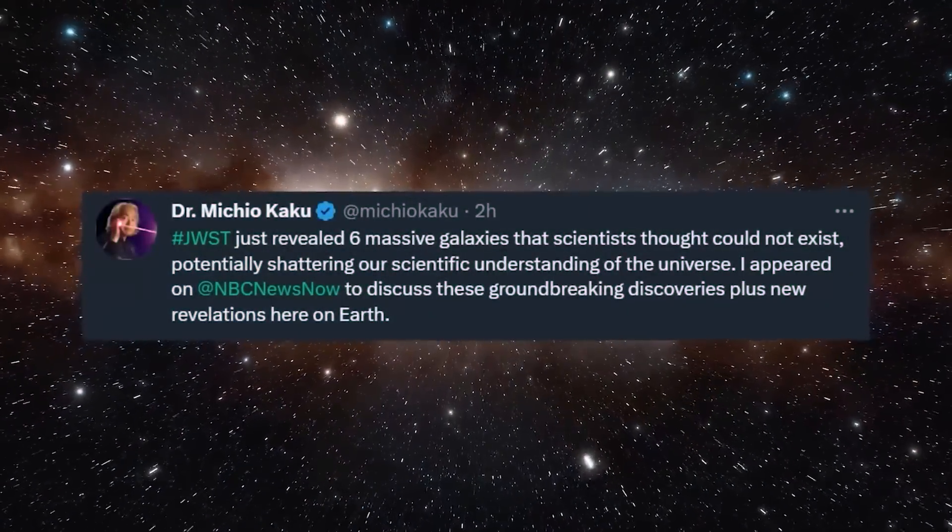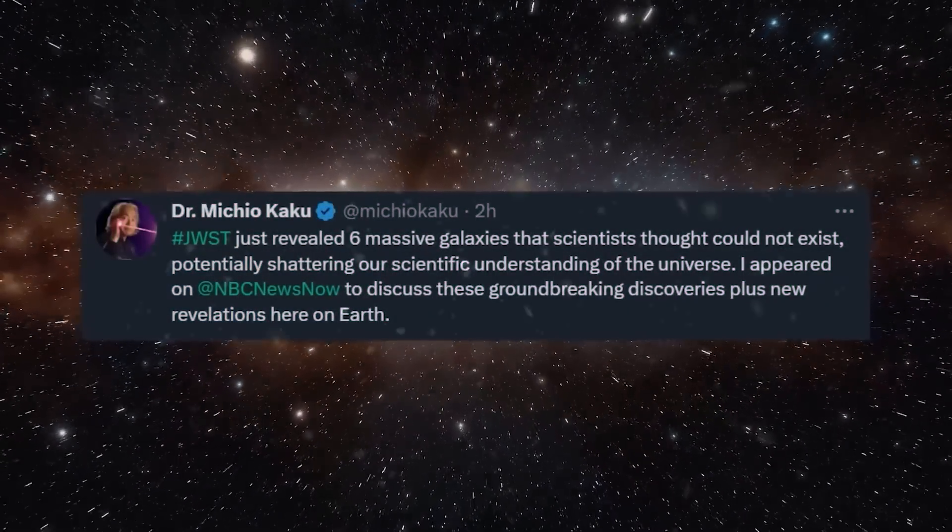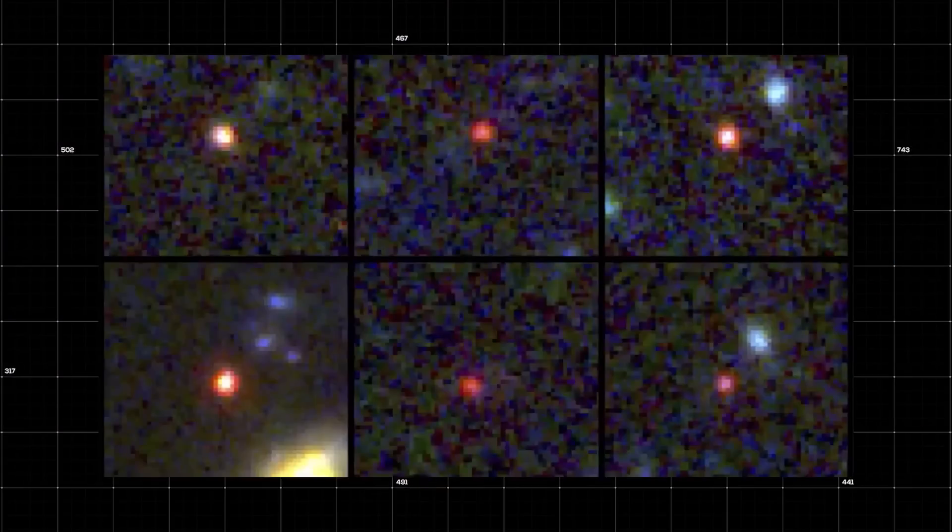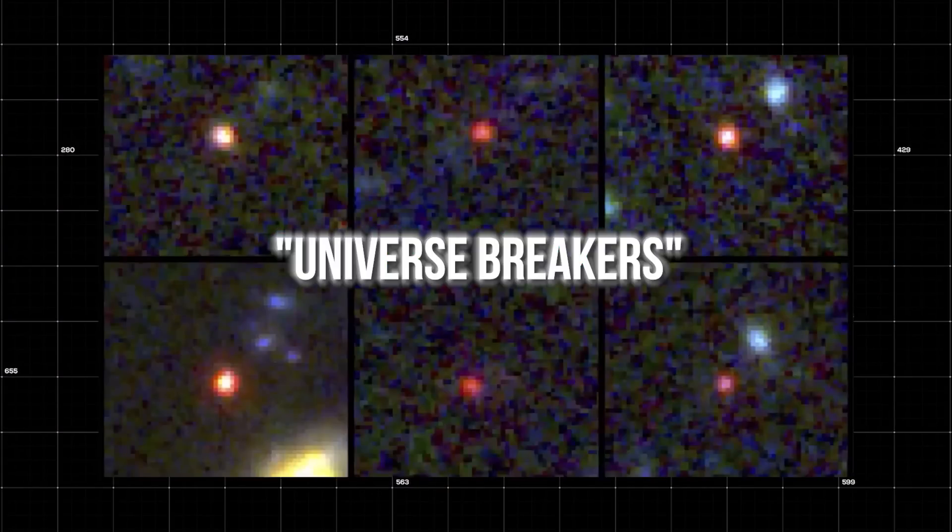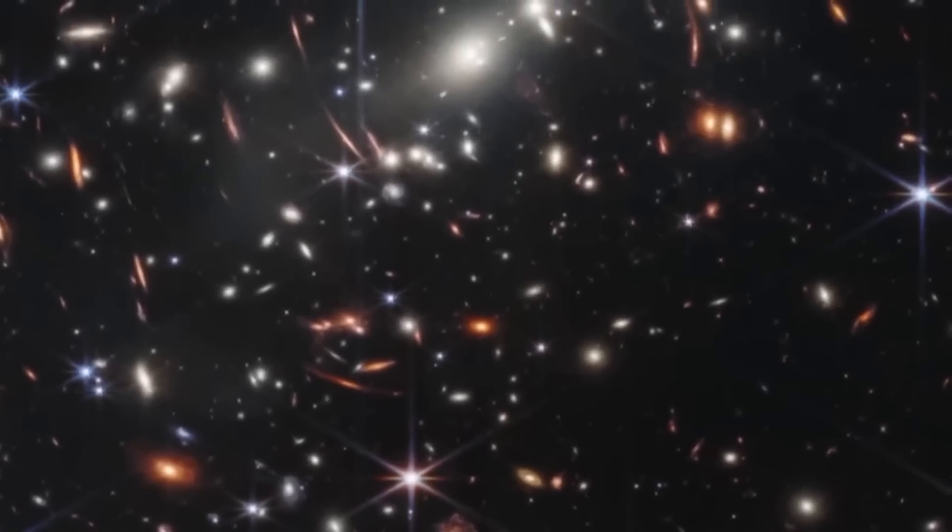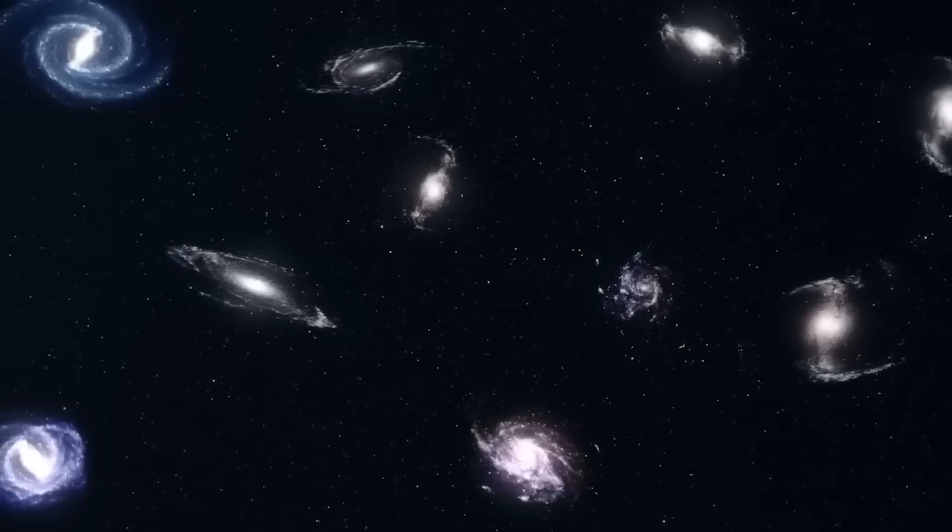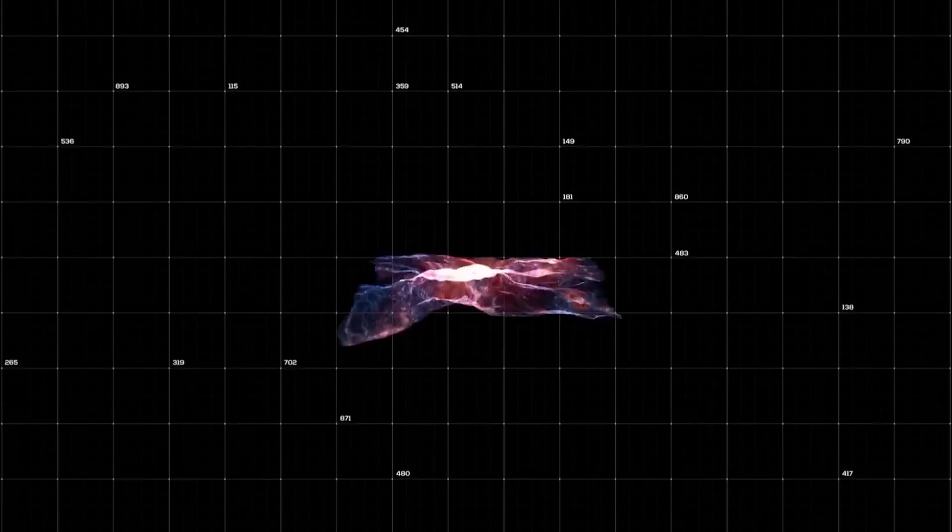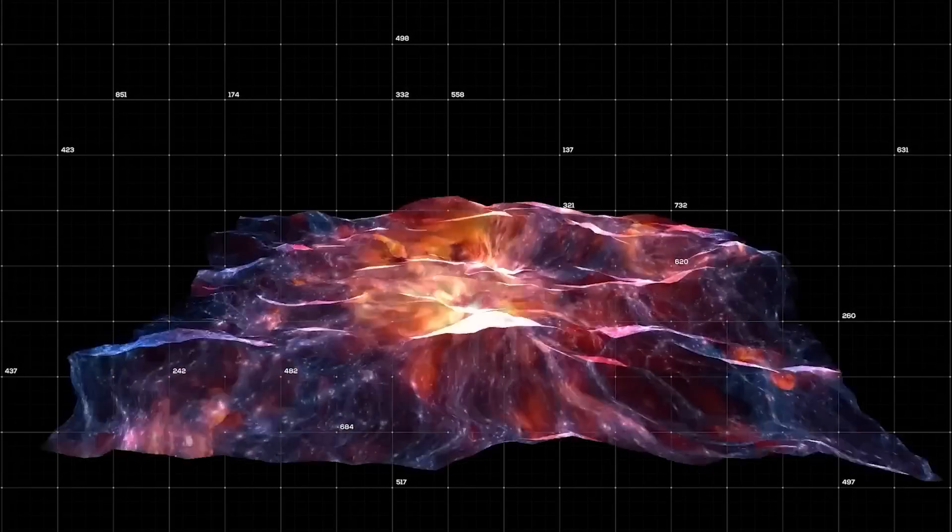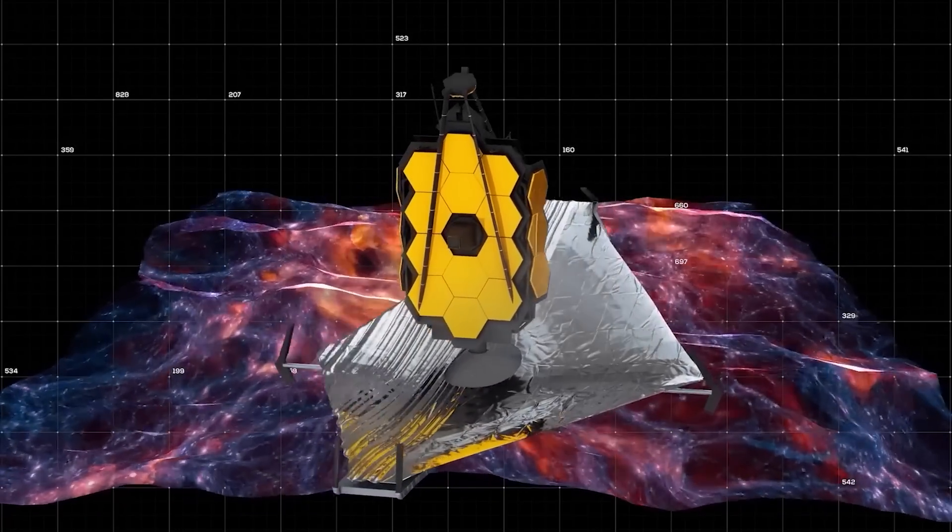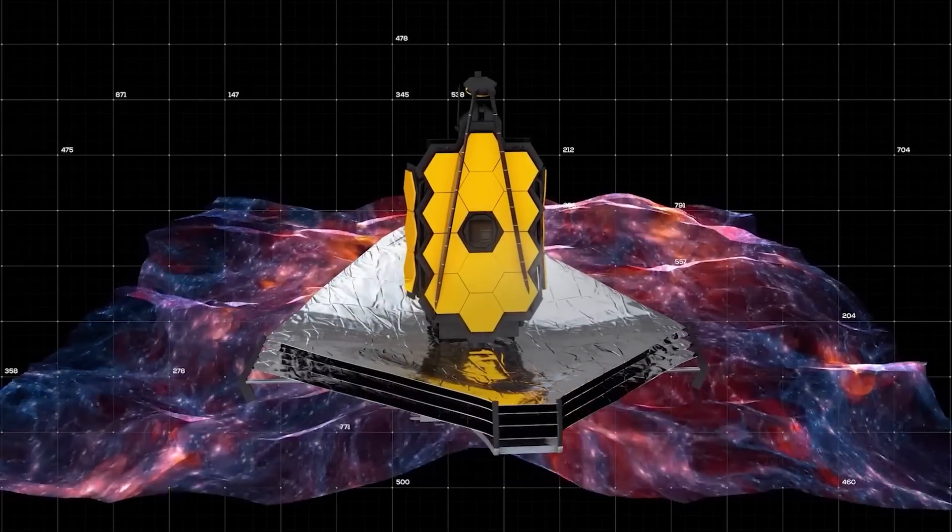Recently, the James Webb Telescope has discovered six massive ancient galaxies, and this discovery has the potential to support the concept of a multiverse. These galaxies, dubbed universe-breakers by astronomers, challenge the current theories of cosmology due to their size and age. According to existing models, these galaxies should not have had enough time to form so soon after the Big Bang. The discovery raises questions about our understanding of how galaxies formed in the early universe, and may require a re-evaluation of basic cosmological principles.